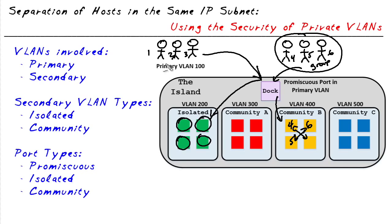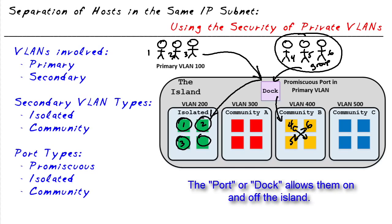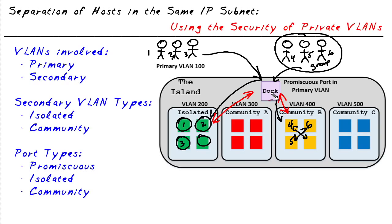The individuals who chose the isolated option can see no one else — they can't see persons four, five, or six, nor can they see persons two or three because they're in this special isolated portion. However, there is something in common between all of these individuals: they all have access to the port, and because they want to leave the island, it's important to have access to the port that lets them off the island to go back where they came from.